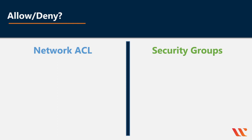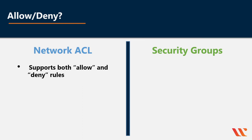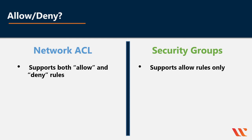Another difference to be aware of is whether you are able to have a deny rule. With a network ACL, it supports both allow and deny rules. With security groups, it supports allow rules only.